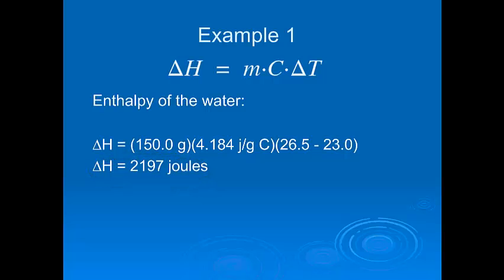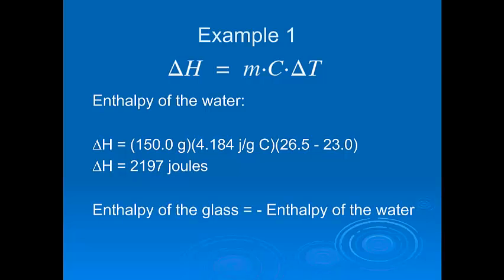Where did the water get that heat? It got it from the piece of glass. So the enthalpy of the glass is the opposite sign from the enthalpy of the water, because the glass lost the heat — it's exothermic — and when it's exothermic, delta H will have a negative value. So delta H for the glass is negative 2,197 joules. We didn't even have to measure anything directly about the glass — we just put it into the water, did all the calculations about the water, and got the information about the glass. That's what I mean by an indirect method.